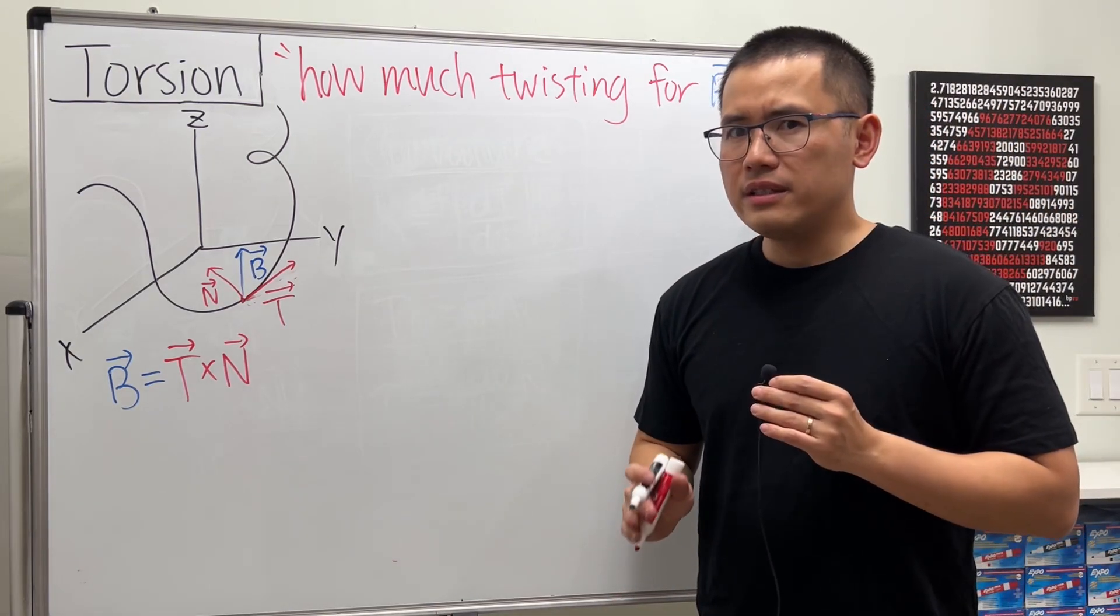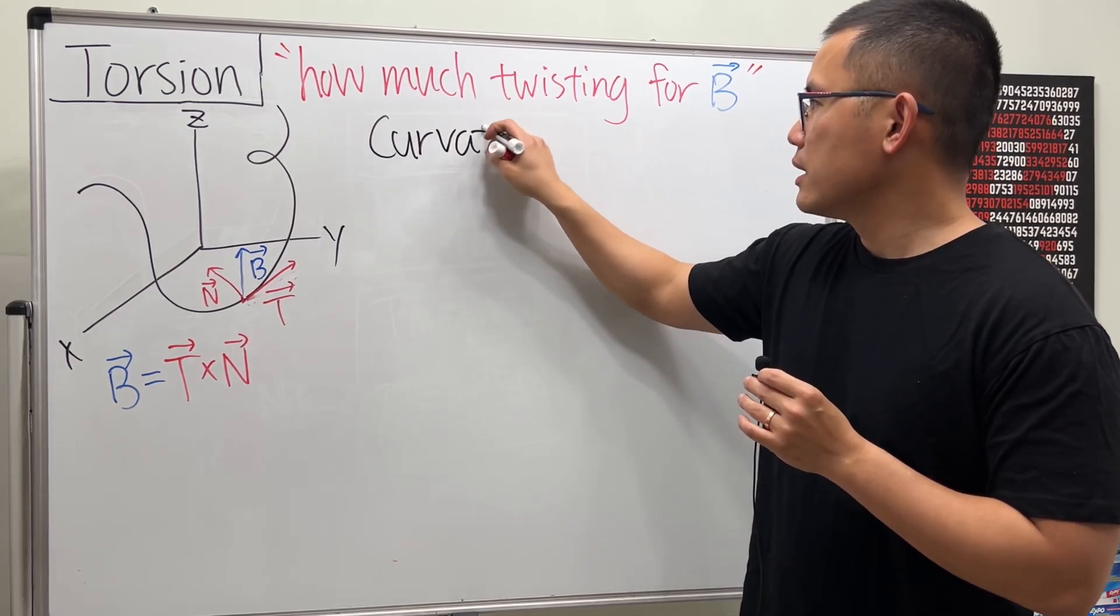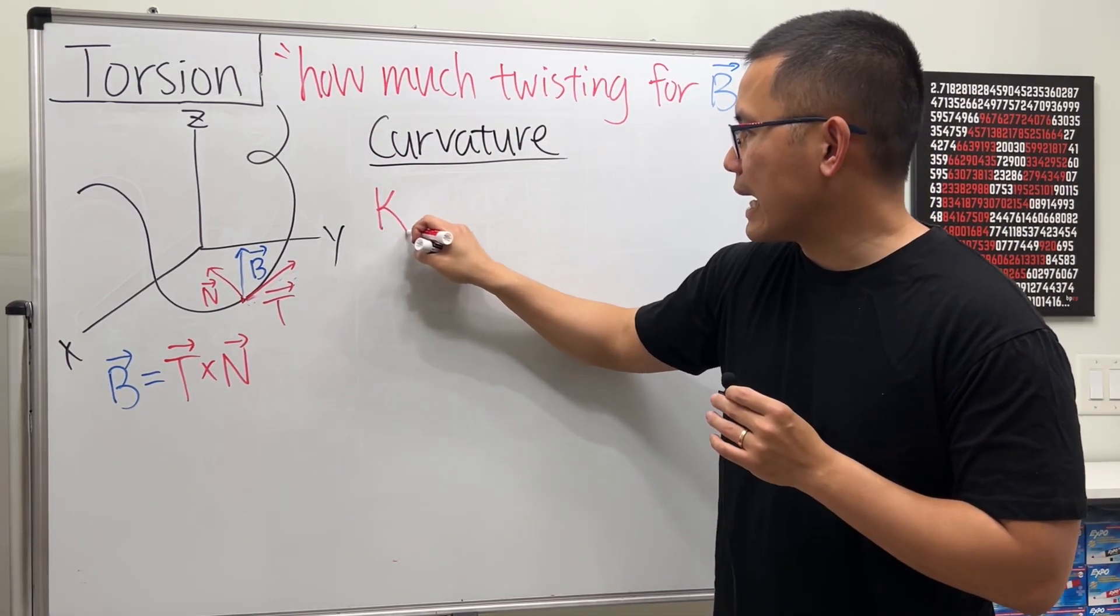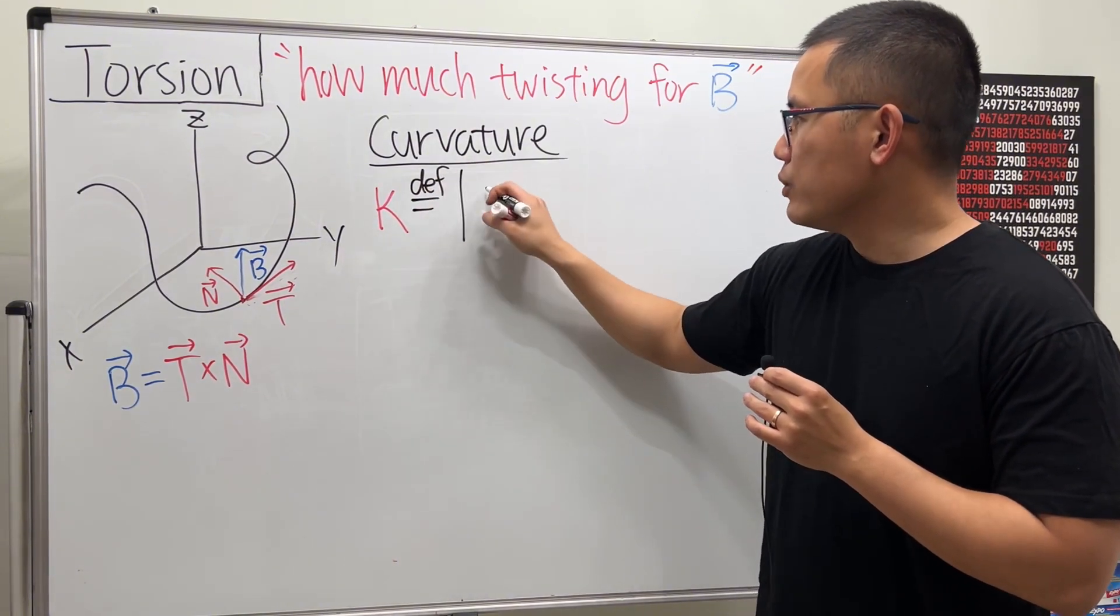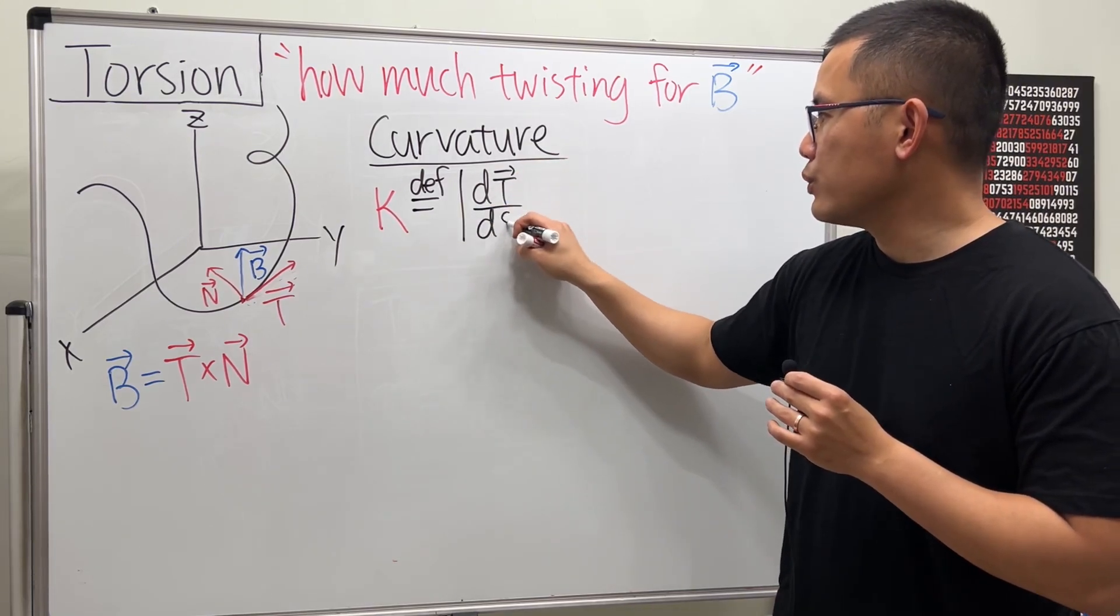And this is different than the curvature. Let me just remind you this real quick. Curvature, which is denoted by κ, is defined to be the magnitude of the derivative of the unit tangent vector with respect to s.